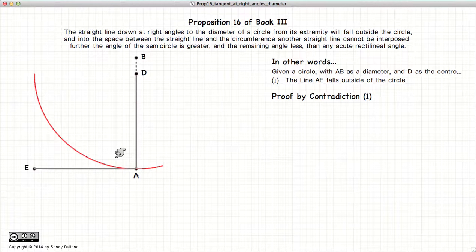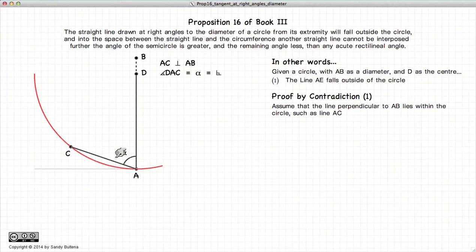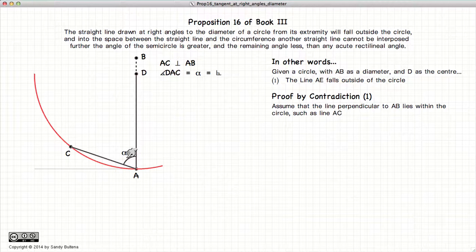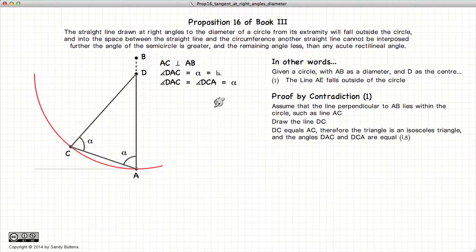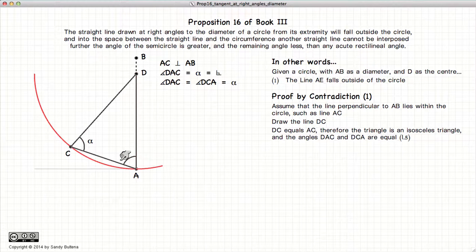Let's start with the first part of this proposition: that the line AE falls outside of the circle. We're going to prove this by the method of contradiction. So let us assume that having drawn our line AC perpendicular to DA — in other words that alpha is a right angle — it intersects the circle at point C. We'll connect our lines CD and look at this resulting triangle. Now CD is equal to AD because they're radii of the same circle, hence it's an isosceles triangle.